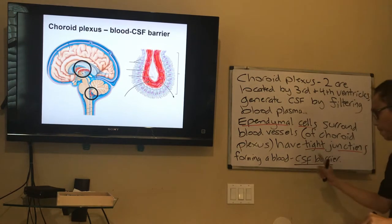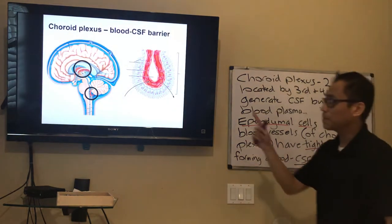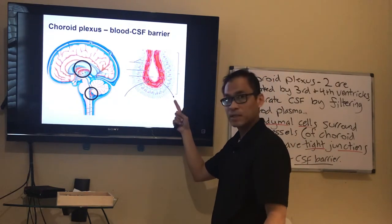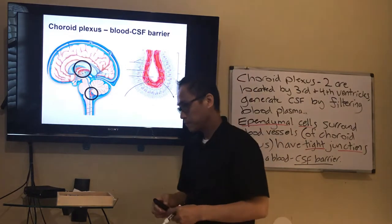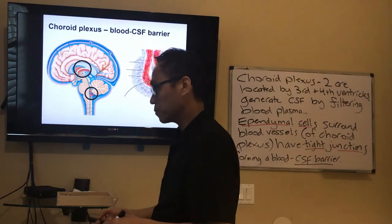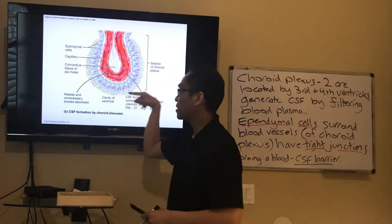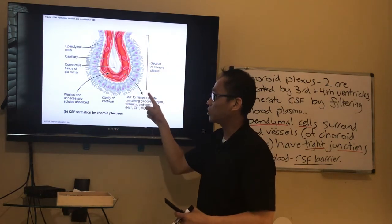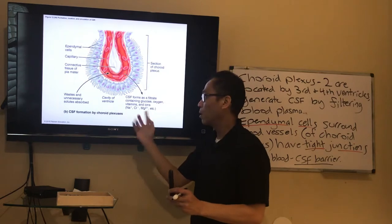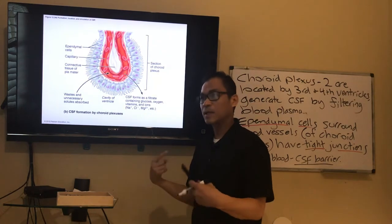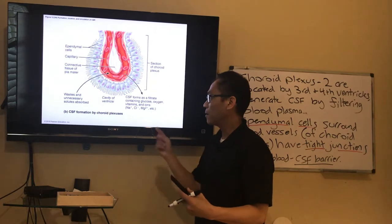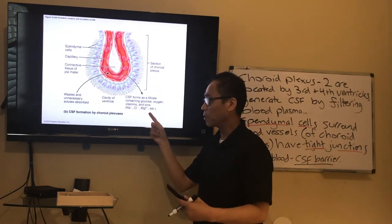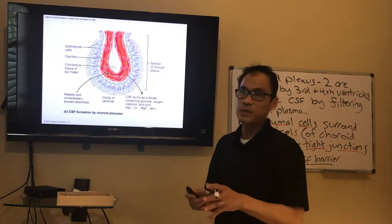The ependymal cells are making the CSF by filtering blood through these tight junctions. Not much gets through — just essential things the neural tissue needs, namely glucose and oxygen. There are other small molecules in there as well. It's a clear fluid that circulates around.